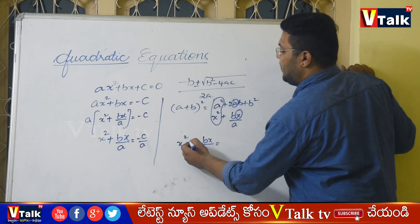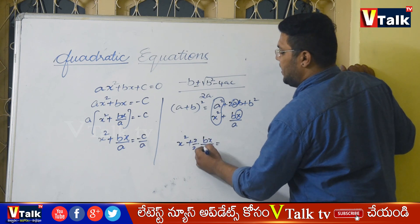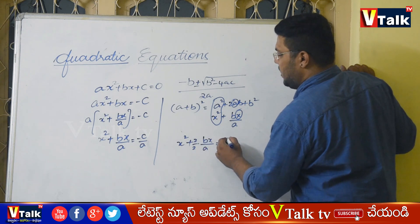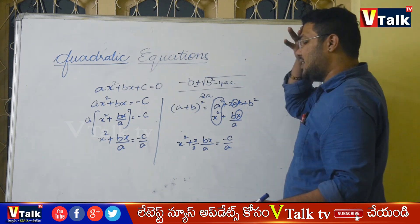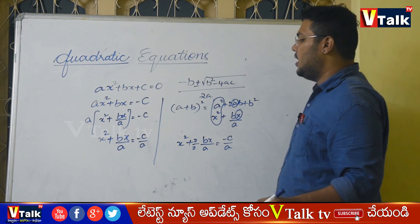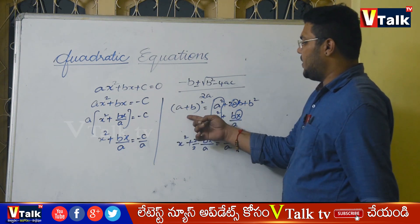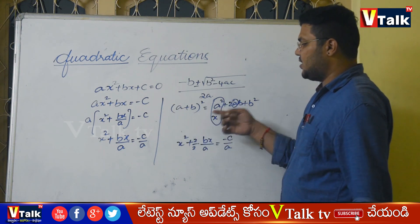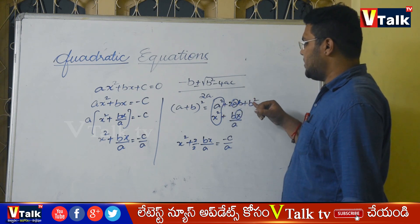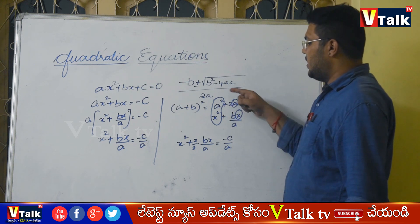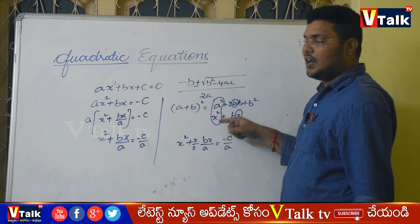x squared plus 2 into x into b by 2a equal to minus c by a. Comparing with a squared plus 2ab plus b squared, here a equals x.